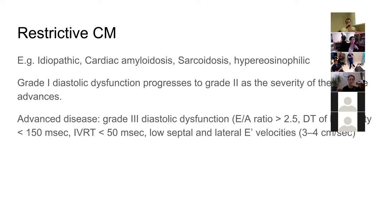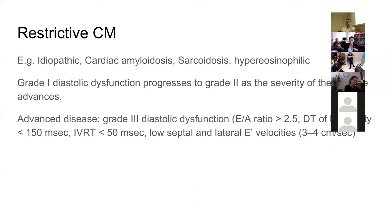Restrictive cardiomyopathy is a pretty heterogeneous group of disorders. It includes idiopathic restrictive cardiomyopathy, cardiac amyloidosis — a big exam favorite — sarcoidosis, and hypereosinophilic cardiomyopathy, which is interesting but rare. The most common one you'll see is cardiac amyloidosis.